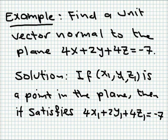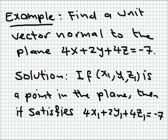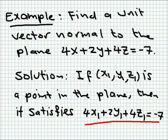Here we would like to find a unit vector — this is a very important preparatory problem. Find the unit vector normal to the plane 4x + 2y + 4z = -7. This is the equation of a plane. If x1, y1, and z1 is a point that lies in that plane, we must satisfy that 4x1 + 2y1 + 4z1 = -7.